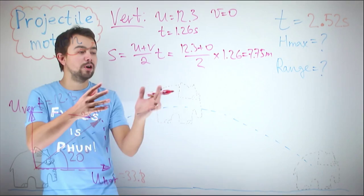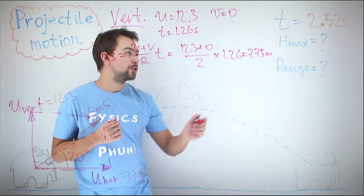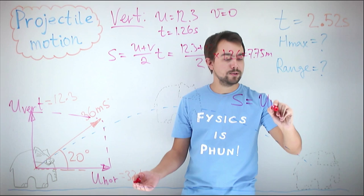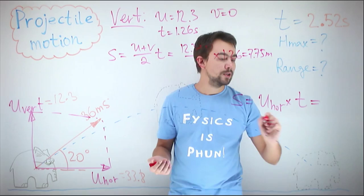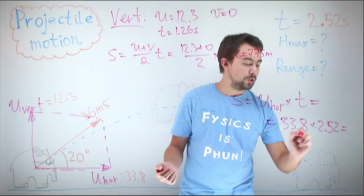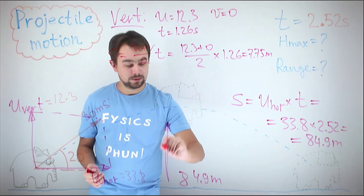To find the range, we consider the horizontal motion. The total time of flight is 2.52 seconds, and horizontally the distance equals the initial horizontal velocity u multiplied by t: 33.8 times 2.52, which gives 84.9 meters. So the range for the elephant is 84.9 meters, and the maximum height is 7.75 meters.